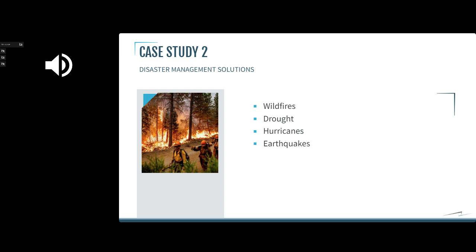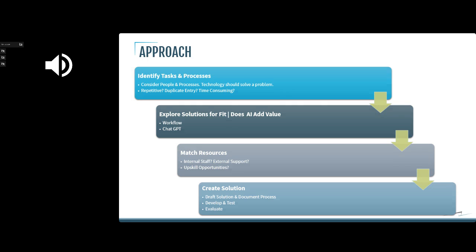We'll go into more detail on those models at a later time. The real thing to keep in mind is creating something that solves a problem — consider your people and processes and identify solutions around related problems. Look for things that are repetitive, duplicate entry, or overly time-consuming, and use those as markers for processes that might be fixable through some form of artificial intelligence.